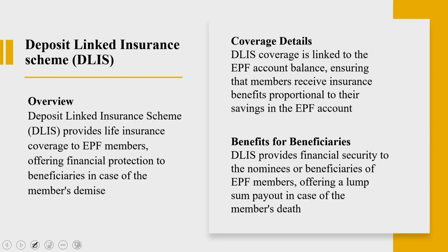Now what about the deposit linked insurance scheme? We have understood this from an insurance angle. Let us understand it from a coverage angle — the eligibility for coverage. When you look into the deposit linked insurance scheme, it acts as a safety net and was established alongside the EPF Act of 1952. When you look into the eligibility for coverage, there are certain critical factors: EPF membership, employment status, and salary limit.